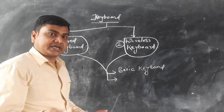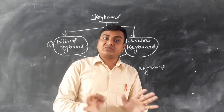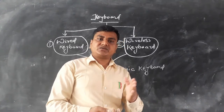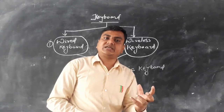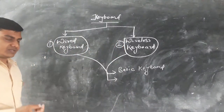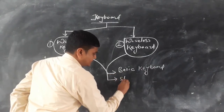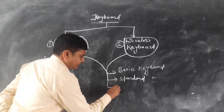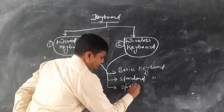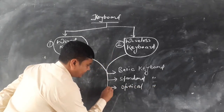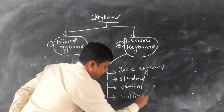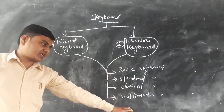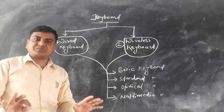Keyboards have a minimum of 94 or 96 keys. The standard keyboard has 106 keys. Then there is also the optical keyboard and the multimedia keyboard. Normally these four types — basic, standard, optical, and multimedia — are described in different books by different authors in different ways.